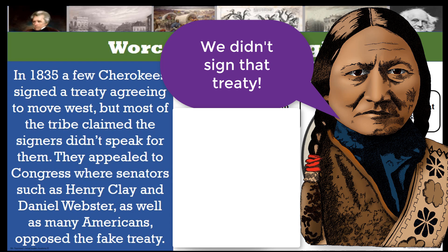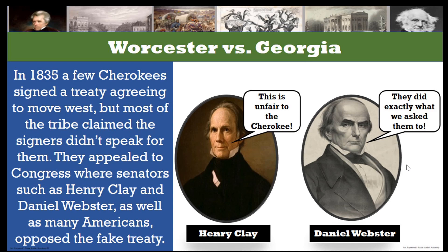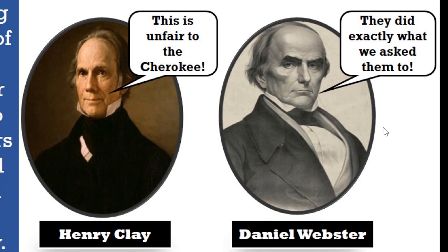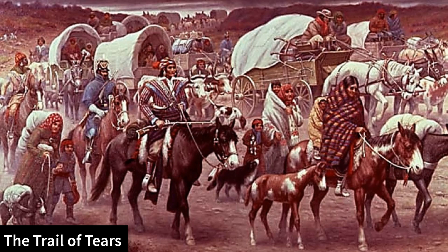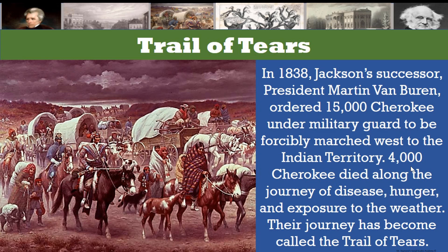In 1835, a few Cherokees signed a treaty agreeing to move west, but most of the tribe claimed that the signers did not speak for them. They appealed to Congress, where Senators such as Henry Clay and Daniel Webster, as well as many Americans, opposed what they called this fake treaty. In 1838, Jackson's successor President Martin Van Buren ordered 15,000 Cherokee under military guard to be forcibly marched west to the Indian Territory. 4,000 Cherokee died along the journey of disease, hunger, and exposure to the weather. Their journey has become called the Trail of Tears — an ugly stain on American history.